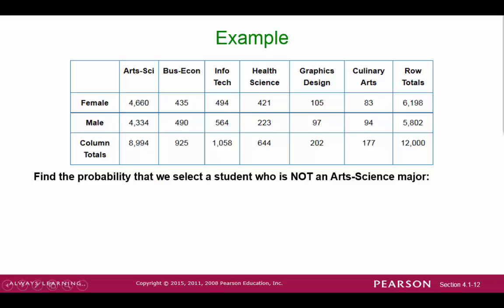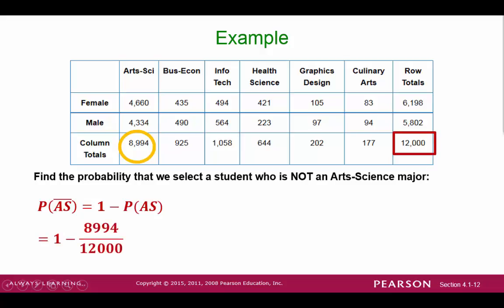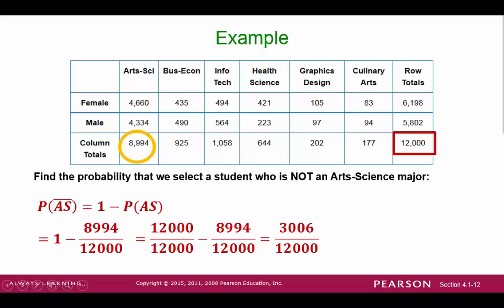Let's take a look at an example. Suppose we want to find the probability that we randomly select a student who is not an arts-science major. Using the complement formula, we can find the probability of selecting an arts-science major and subtract it from 100%. We identify the values on the table and create our expression. Finding common denominators and subtracting gives our result: if we select a student at random, the probability of selecting a student who is not an arts-science major is about 25%.